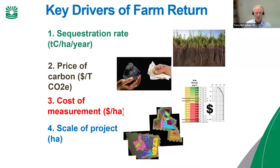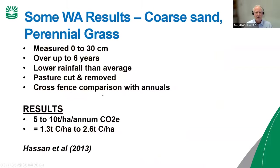Scale of project is also important. Once you start to get below about a thousand hectares, these projects start to become a little more dicey. But as the price of carbon lifts and as we get more confident in sequestration rates, we can come right back to small-scale projects. With a potential price of soil carbon credits up around $100 a tonne, that starts to bring the scale way back down into the 300 to 500 hectare range, providing your sequestration rate is reasonable.